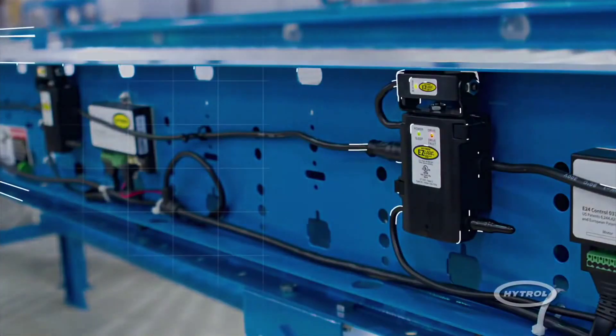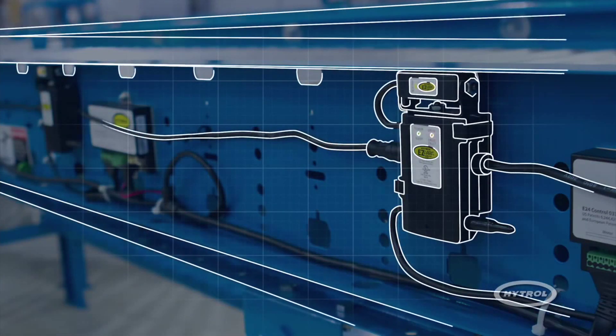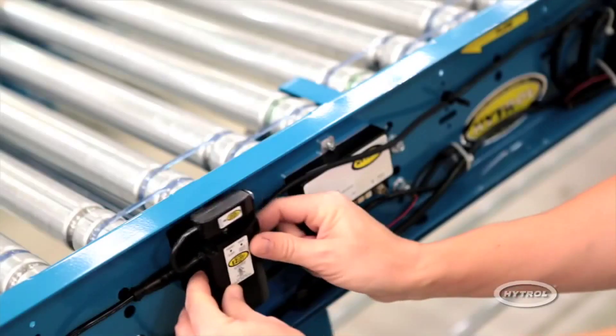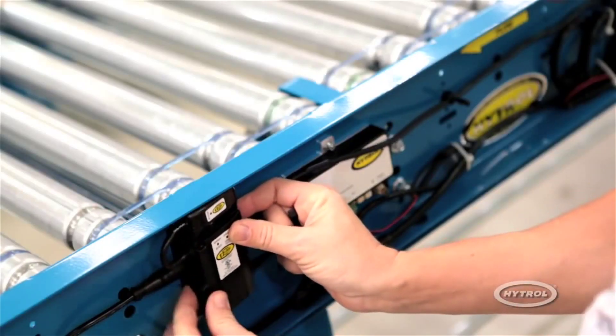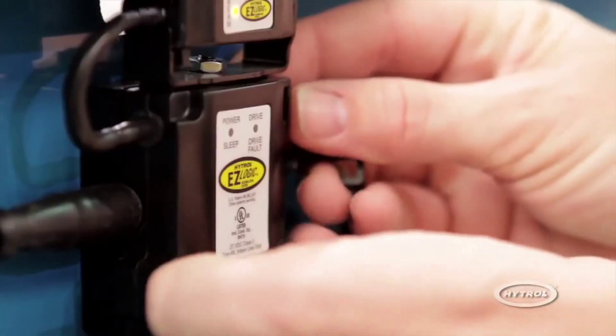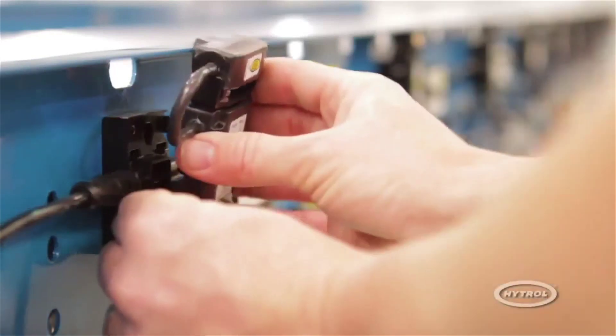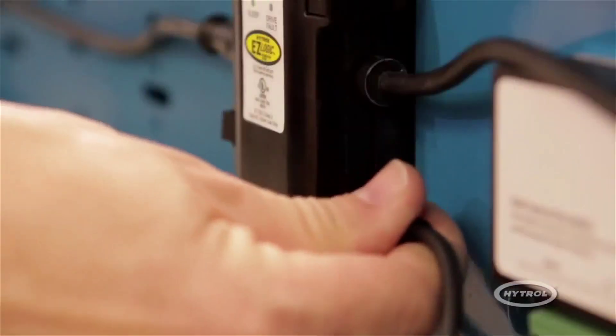Ease of use and replacement are benefits that make Gen 3 zone controllers more advanced than ever before. Moving inputs or outputs can be accomplished by simply switching one controller with another. Replacing a zone controller is as easy as removing the existing unit, snapping a new one in place, and configuring it.